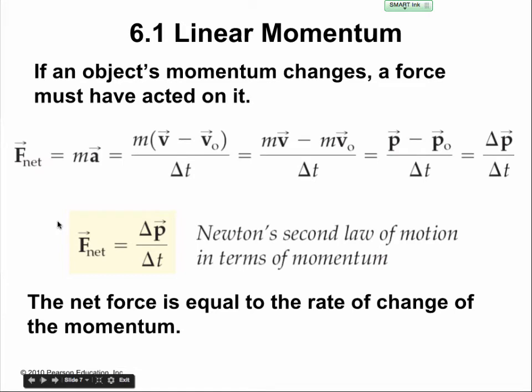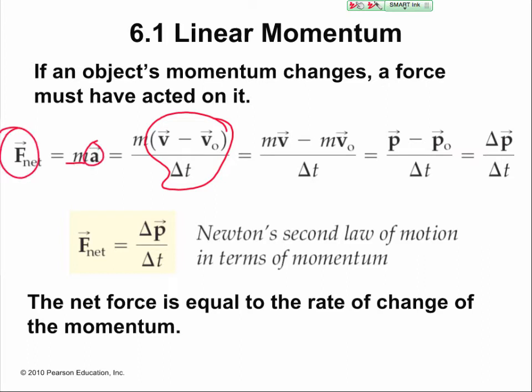If an object's momentum changes, a force must have acted upon it. An object will remain in motion — the velocity stays the same unless there's an acceleration applied. Since the mass doesn't change, the only thing that changes is acceleration, which changes velocity. So if we have force equal to mass times acceleration, and acceleration is just the change in velocity over time, we can distribute the mass and get mv minus mv-naught, which is a change in momentum. A change in momentum over time is equal to force.